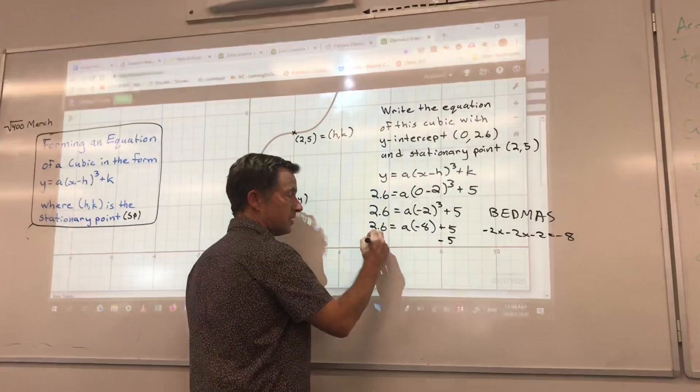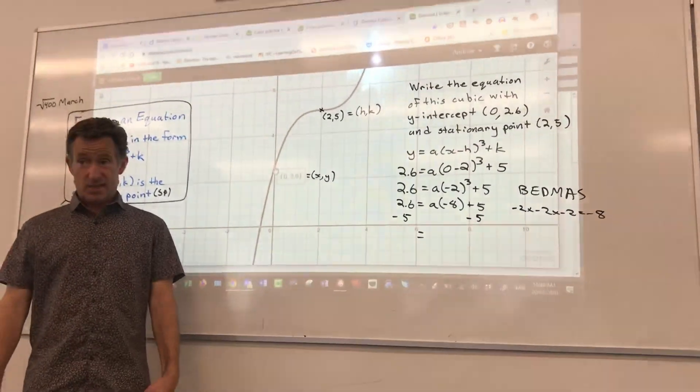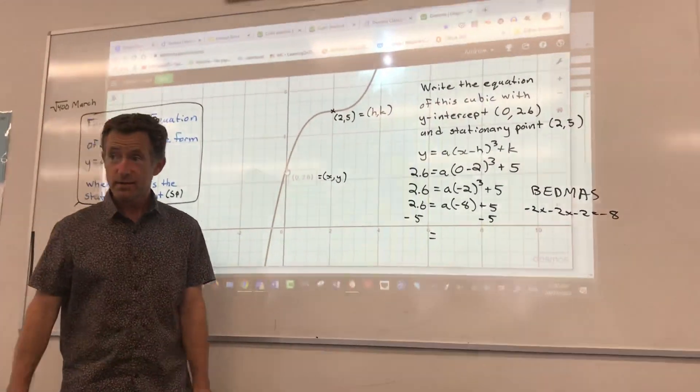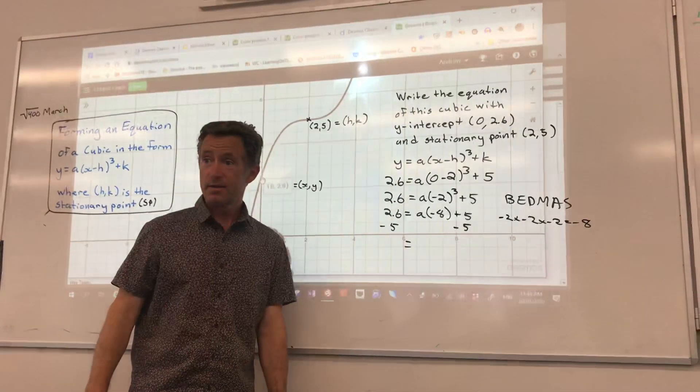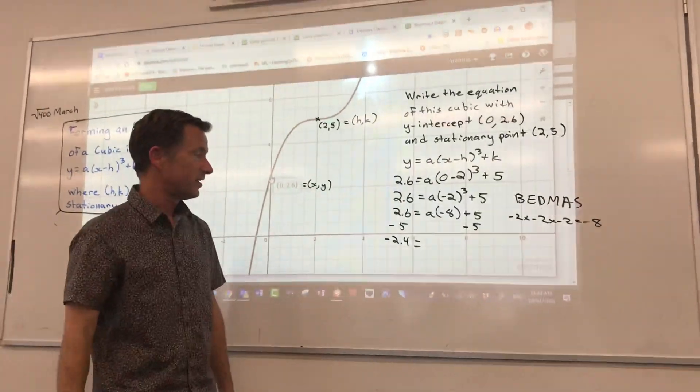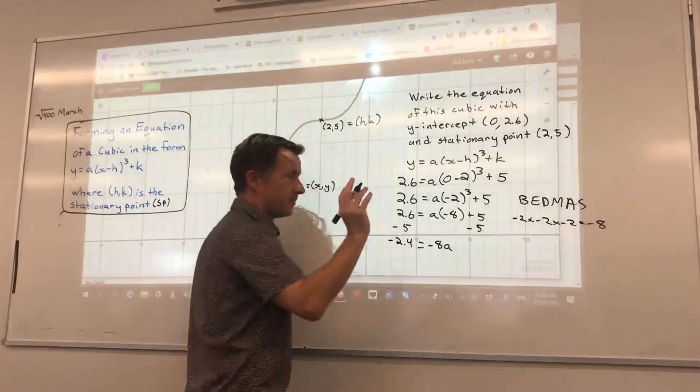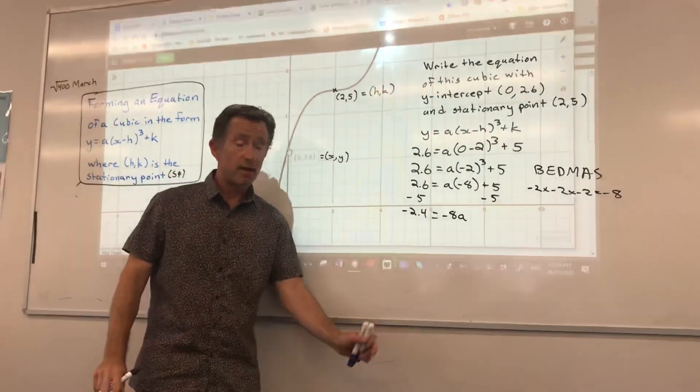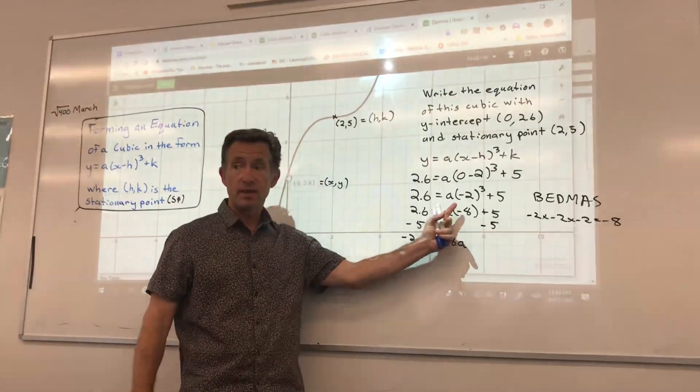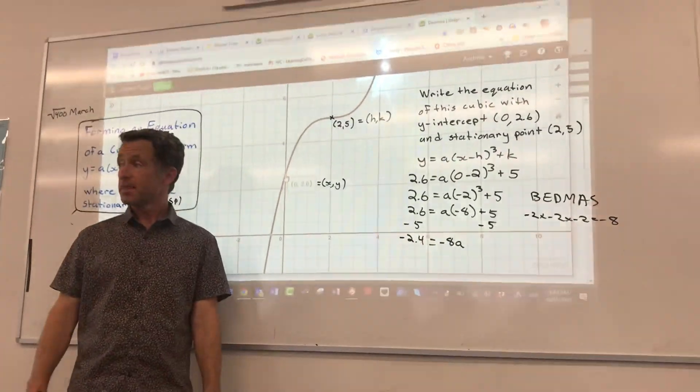2.6 equals a times negative 8 plus 5. And here I have a two-step linear equation that we did years ago, hopefully. Subtract 5 from both sides. And I get 2.6 minus 5 gives me negative 2.4. Am I right there? Yes. Oh, I'm trying to do calculations in my head while the camera's rolling. And I clean this up to get negative 8a. All right? And I'm just going to pause right there because, yeah, that's kind of the cool way of writing that instead of a times negative 8. We write it as a coefficient.